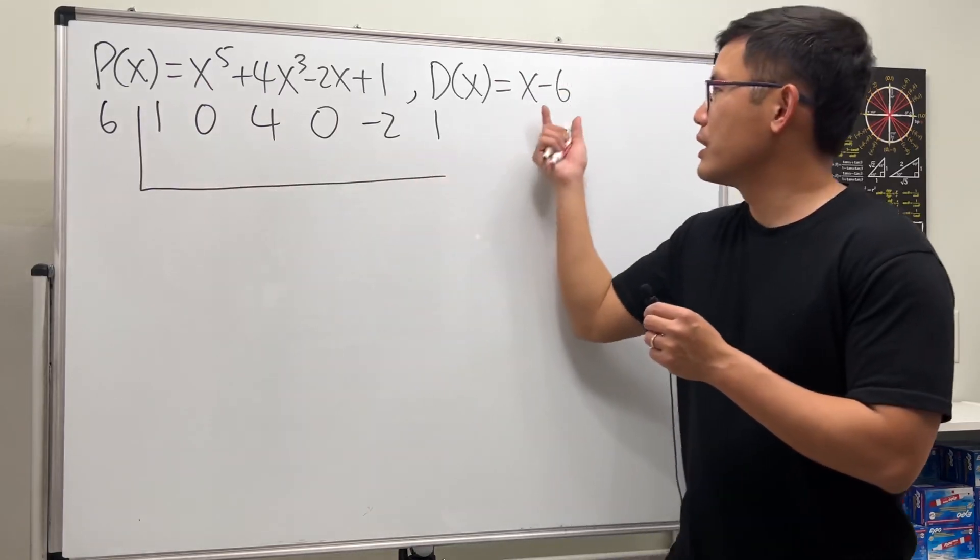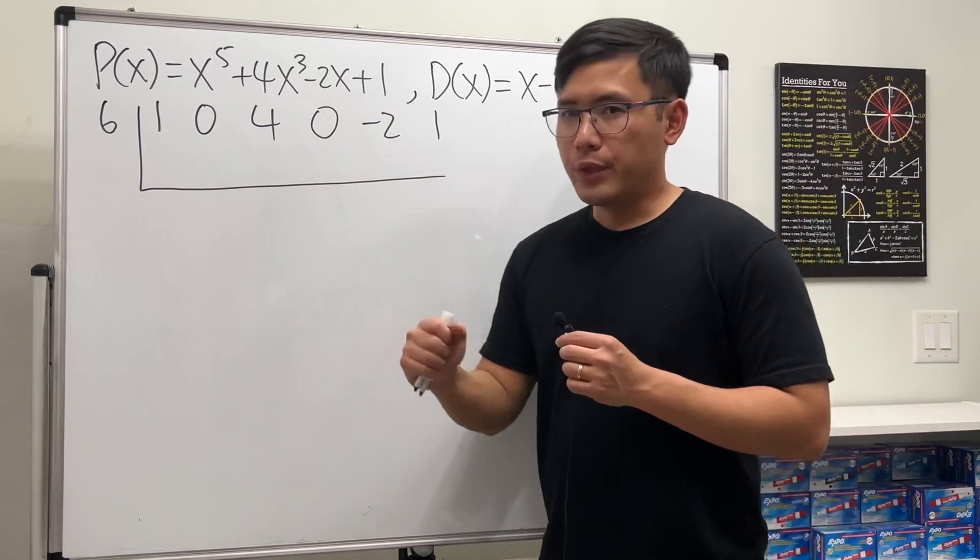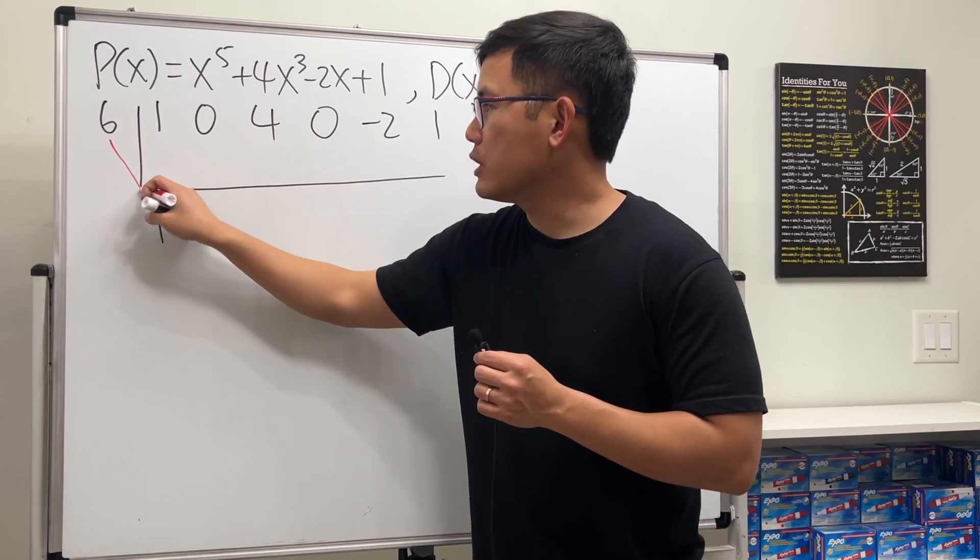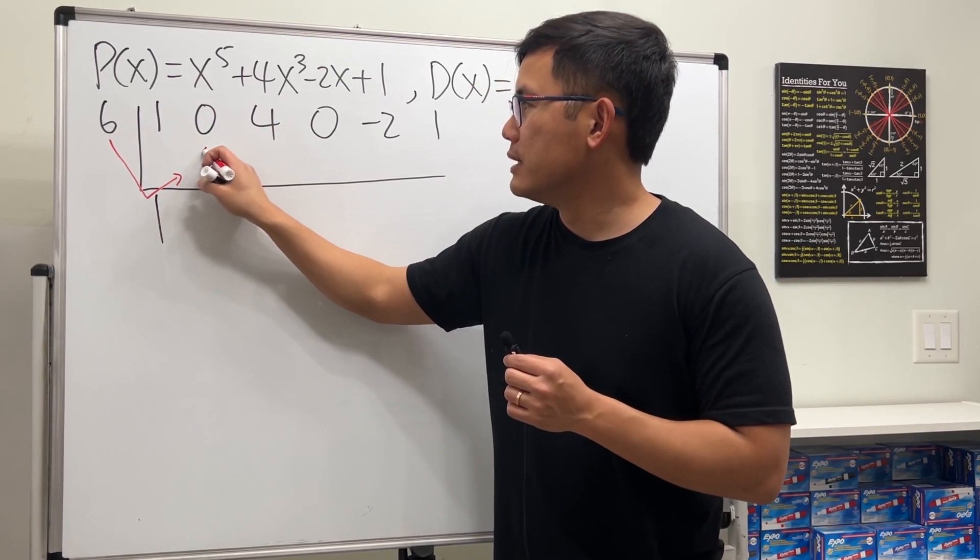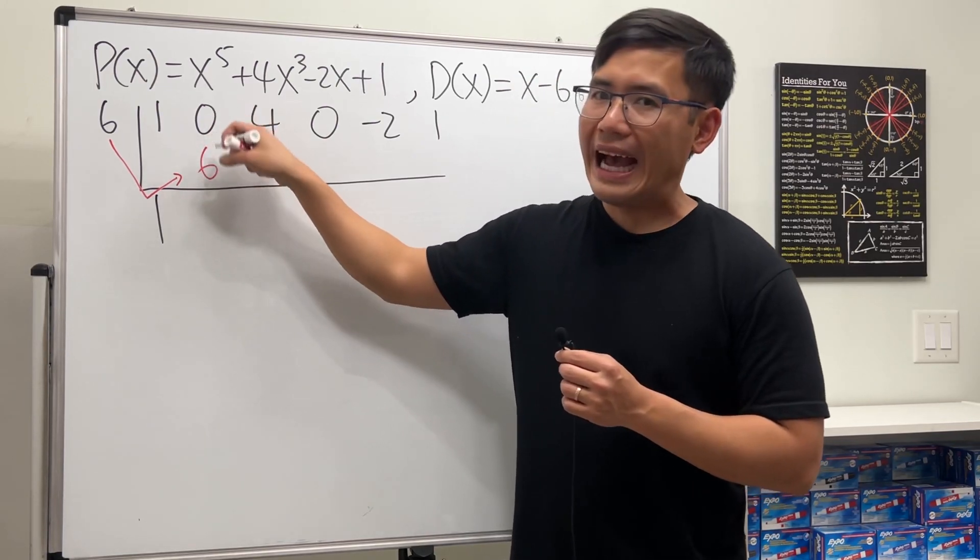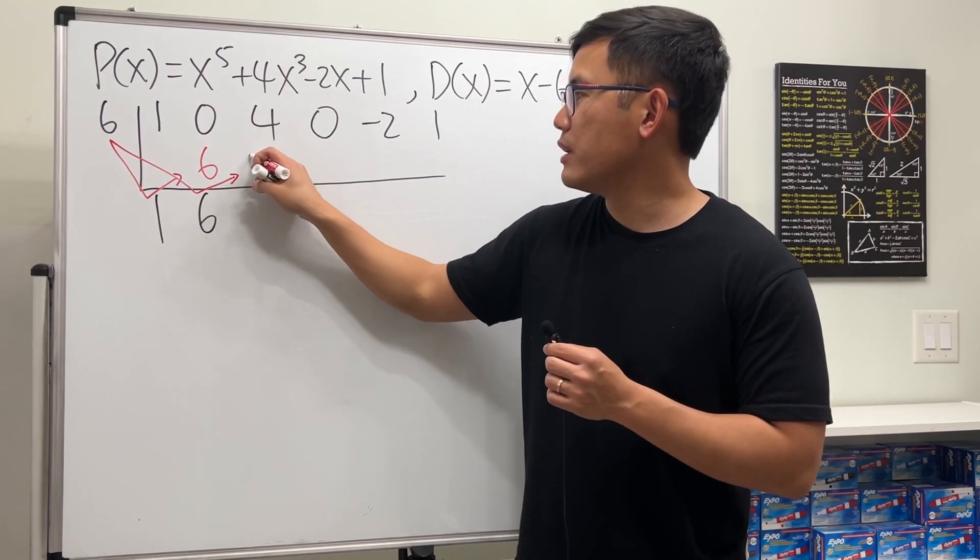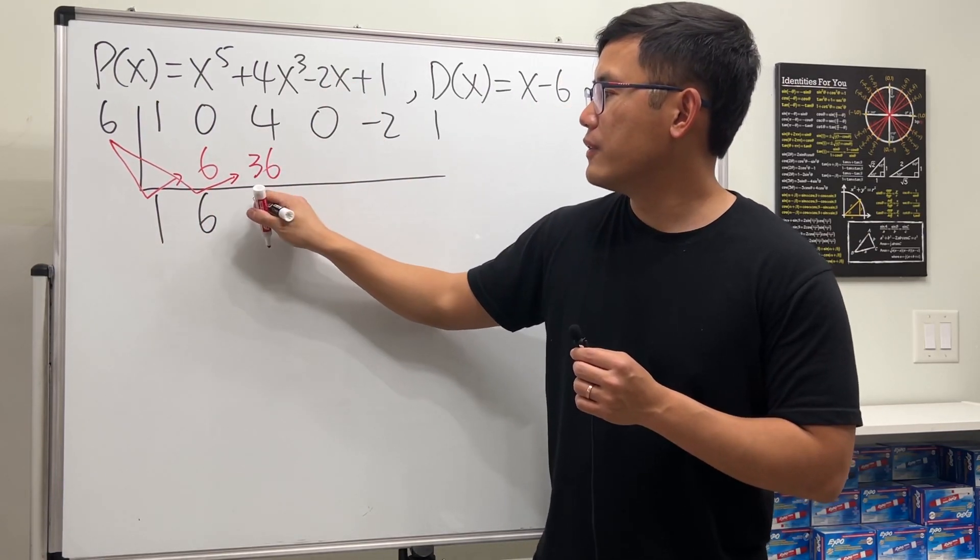Here we go. Put the 1 down, and then we take the 6, multiply with the 1, and put it here, which is 6. Continue. We add: 0 plus 6 is 6. Take this times that is 36, we put it here, we add, we get 40.